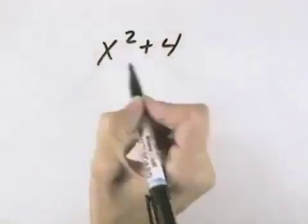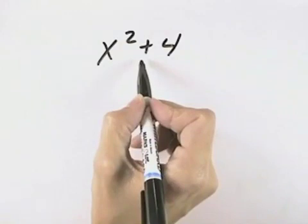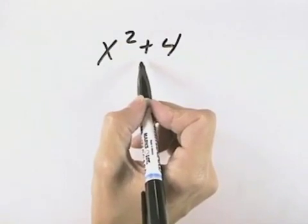So for this problem, since it's x squared plus 4, we can see that it's addition, so it cannot be the difference of squares because difference means subtraction.